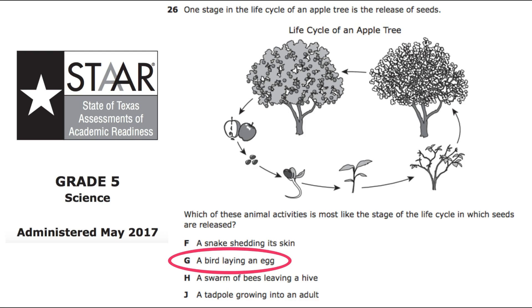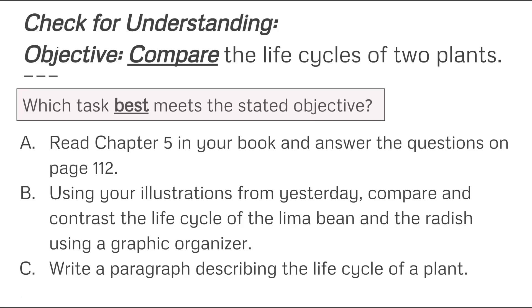This question appeared on the 5th grade science test in 2017 and was aligned to standard 3.10, which is vertically aligned to the 4th grade standard 4.10. By looking at this item, what can you learn about the level of thinking your students will need to be able to do? Now that you've determined how the students will be assessed, which task will best prepare students for success? Take a moment to read through the choices and determine the task that best meets the objective: comparing the life cycles of two plants.